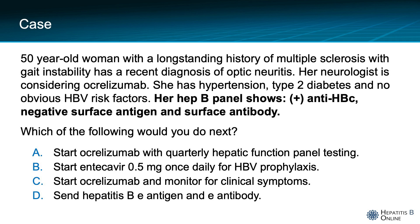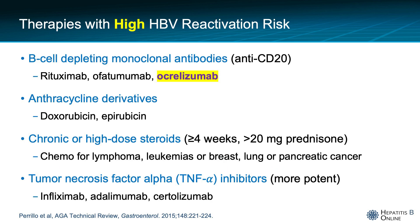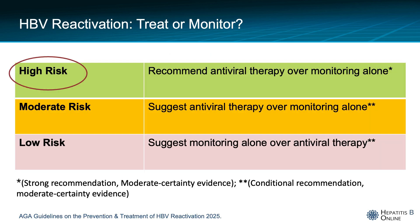Her hepatitis B panel shows a positive core antibody and a negative surface antigen and surface antibody. Which of the following would you do next? Start ocrelizumab with quarterly monitoring; start entecavir 0.5 mg once daily for HPV prophylaxis; start ocrelizumab and monitor for clinical symptoms; or send hepatitis B E antigen and E antibody? The answer is B, to treat. The reason we treat is because ocrelizumab is a B-cell depleting monoclonal antibody with high risk of HPV reactivation, so regardless of whether you are a chronic carrier or someone with core antibody but negative surface antigen, the recommendation is to treat.